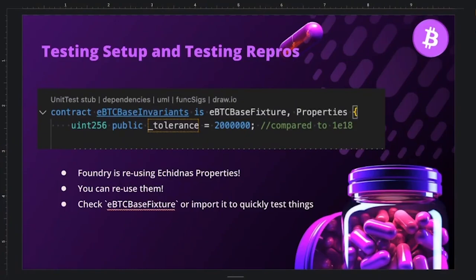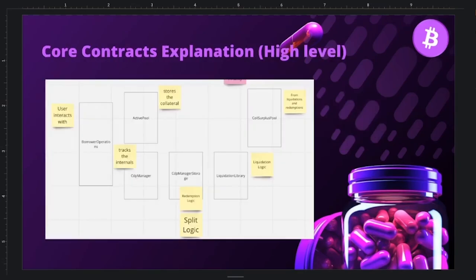Antonio is described as a wizard with fuzzing tools. The team learned a lot working together to set up property-based testing using fuzzers rather than formal verification, and they're excited to let the warden community play with this infrastructure.